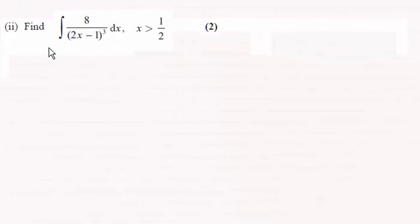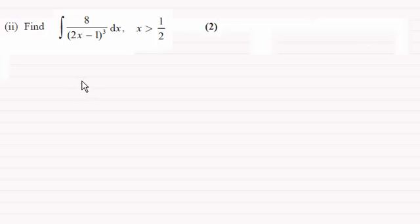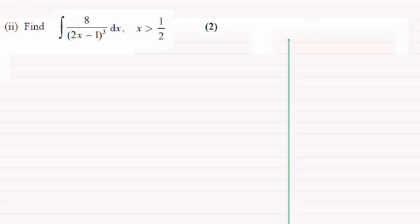In a previous video I showed you how we could integrate 8 over (2x minus 1) to the power 3 with respect to x by using a formula or by recognition. There was another way we could do this and that was by substitution. By substitution, we let the denominator 2x minus 1 equal u.